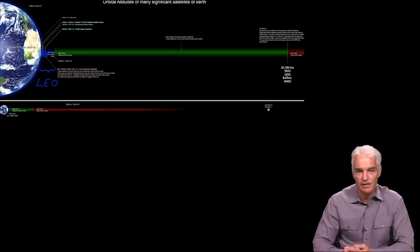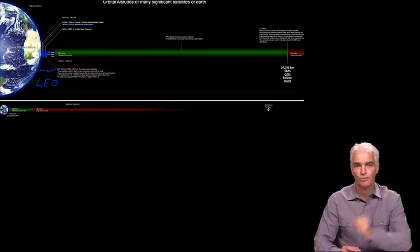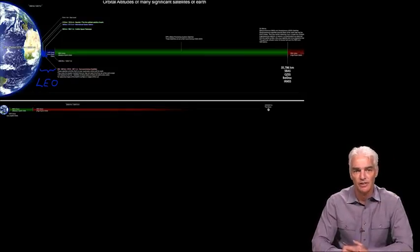Spy satellites, weather satellites are all in that LEO orbit. Any satellite you can see with your naked eye, if you go out at night and you see a little dot moving across the sky and it's a satellite, that's a low earth orbit satellite.